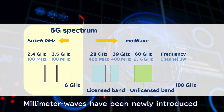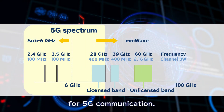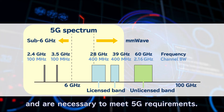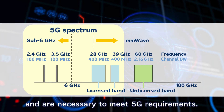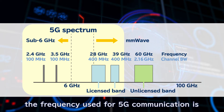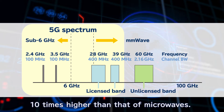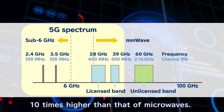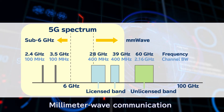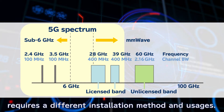Millimeter waves have been newly introduced for 5G communication. They have a wide bandwidth and are necessary to meet 5G requirements. On the other hand, the frequency used for 5G communications is 10 times higher than that of microwaves. Millimeter wave communication requires a different installation method and usages.